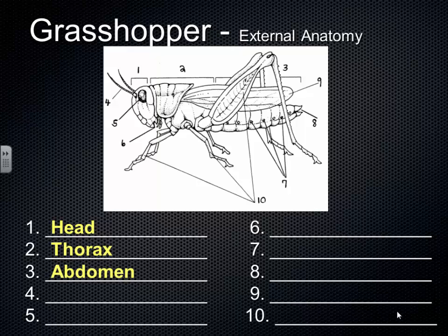Speaking of sense organs, the antennae — many insects have antennae, and they are sense organs. They bring in sensory information in several ways: they are sensitive to motion, and also sensitive to certain chemical signals, like the sense of smell. They relay that information to the rest of the nervous system, so the antennae are very important.